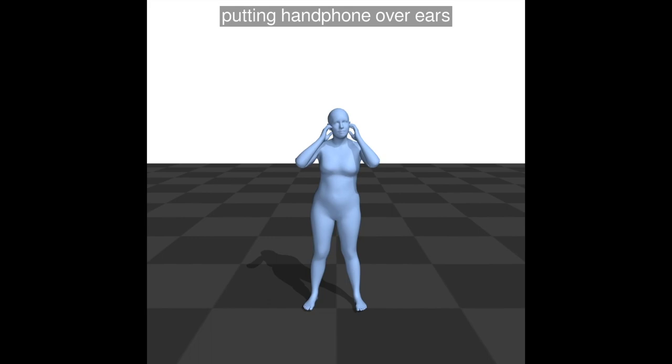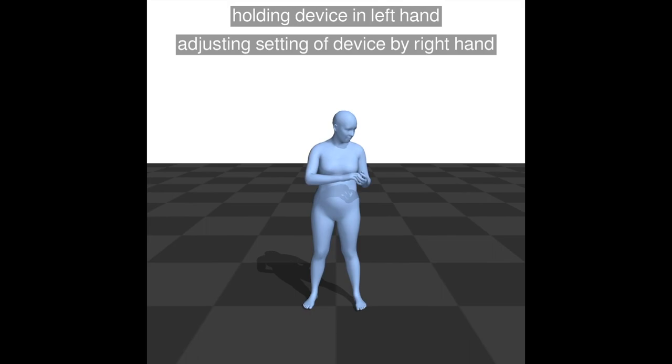Here's an example of an everyday activity: listening to music. Babel captures the simultaneous actions like looking around while holding the device, holding the device with the left hand while adjusting the settings with the right hand and shaking head while holding the device.